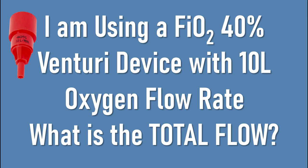I'm using a 40% venturi device — the red one — with 10 litres of oxygen flow. Remember how the venturi works: the fresh gas flow goes into the narrow nozzle, and on the side it says 40% and 10 litres per minute. As the 100% oxygen enters the venturi, it entrains air through the side vents. The question is: if I'm giving 10 litres at 40%, how much air must be entrained to get the right air-oxygen blend and also meet the patient's peak flow demand?